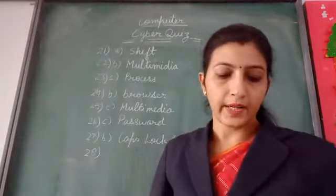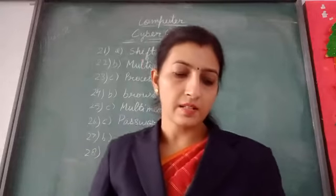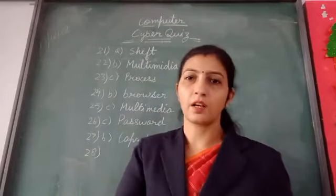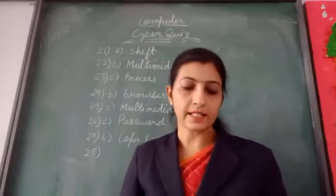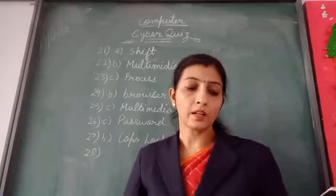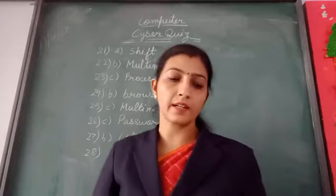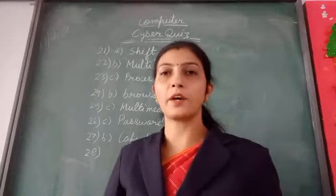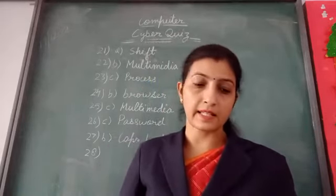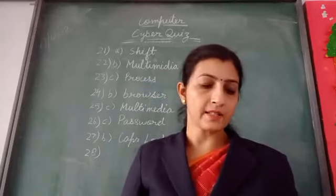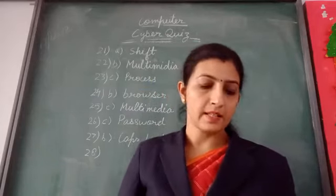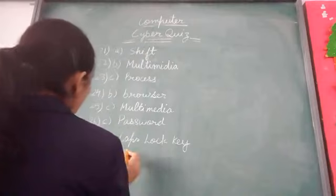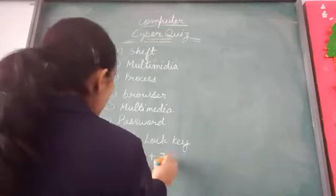Now question 28: dash is the shortcut key to undo the most recent action. Which key can you use to undo? The options are Control+V, Control+Z, and Control+X. The right answer is option B: Control+Z. Write down option B for question 28: Control+Z.